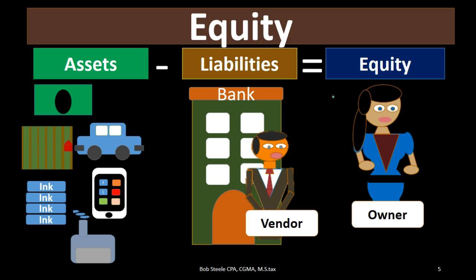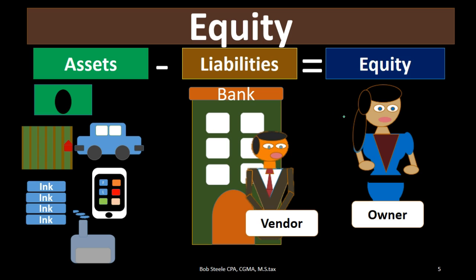When we record equity, remember that we're talking about a book value, because we don't really know exactly how much we're going to sell an asset for — for example, a car on the books at a certain amount might actually sell for a different amount, resulting in a gain or loss on that sale. That's why we talk about net assets or a book value of the company when discussing assets minus liabilities equaling equity.